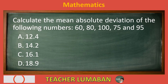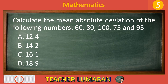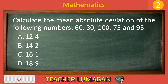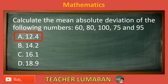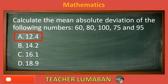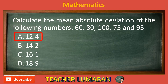Choose the suitable answer based on the given choices in 5 seconds. 5, 4, 3, 2, 1. The correct answer is letter A, 12.4. The mean absolute deviation of 60, 80, 100, 75, and 95 is 12.4.